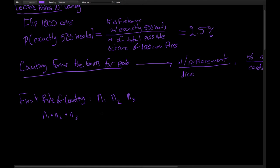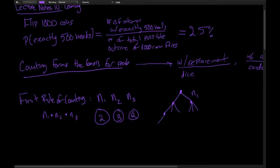Another way to think about this is as a tree. For example, if you have two ways to make the first decision, three ways for the second, and two ways for the third, you can draw a tree starting from one root. Each of the two n1 branches splits into three n2 branches, and each of those splits into two n3 branches. You should have 12 leaves based on the first rule of counting — 2 times 3 times 2 — and indeed there are.